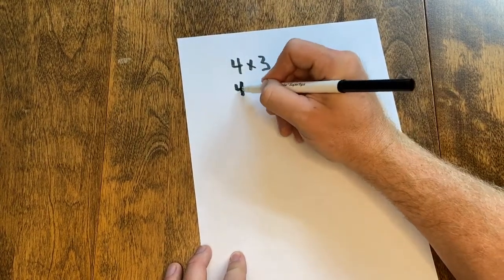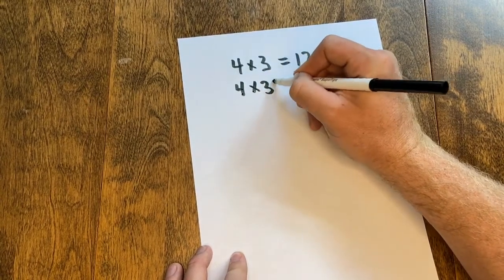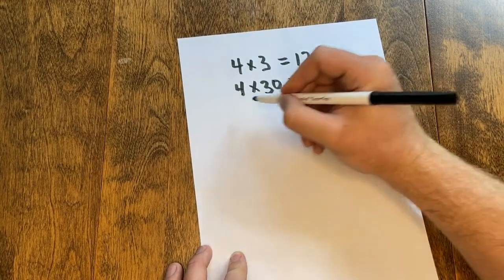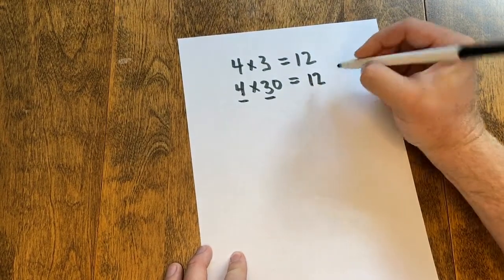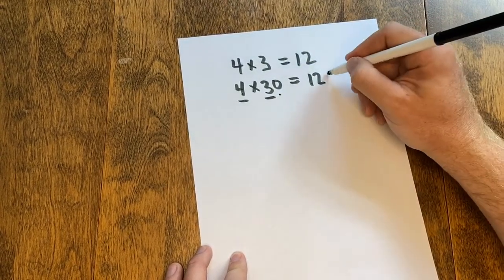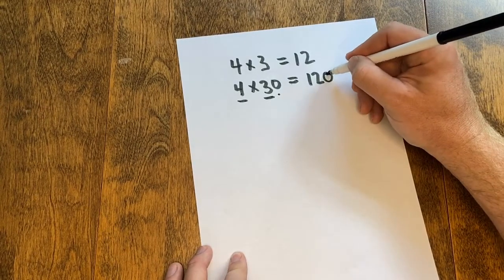We can use that fact when multiplying 4 times 30. We just take 4 times 3, which is 12, count the zeros, there's 1, and add it to our product, so it's 120.